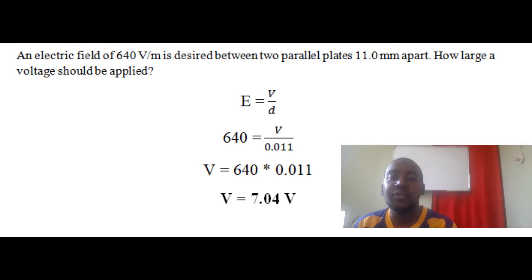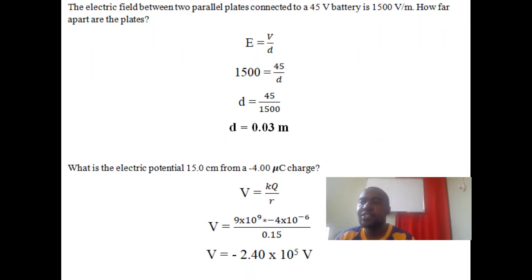The next question: the electric field between two parallel plates connected to a 45-volt battery is 1500 V/m. How far apart are the plates? We use E equals V over d, so E is 1500 and V is 45. Dividing 45 by 1500 gives d equals 0.03 meters.